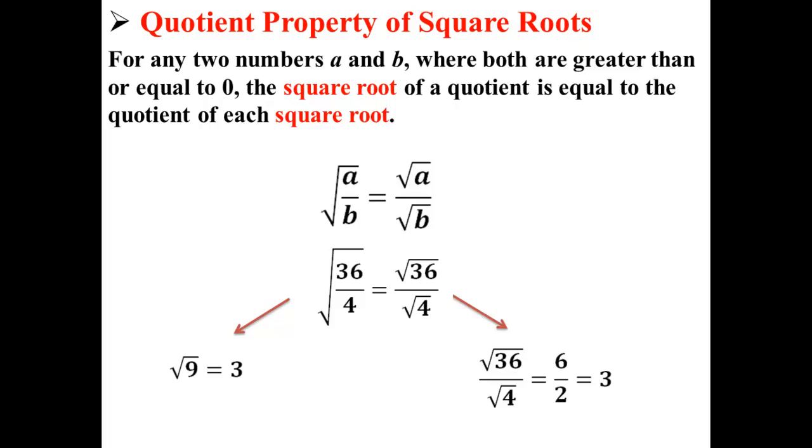But we can also take the square root of 36, which is 6, divided by the square root of 4, which is 2. 6 over 2 also gives us an answer of 3.